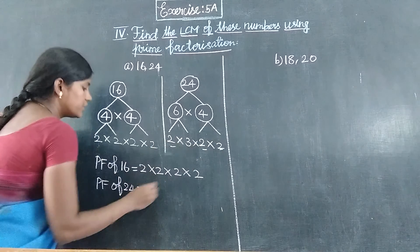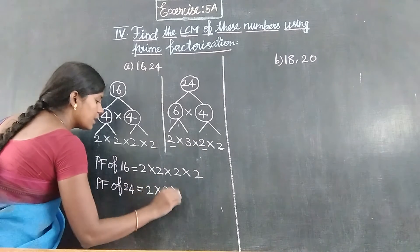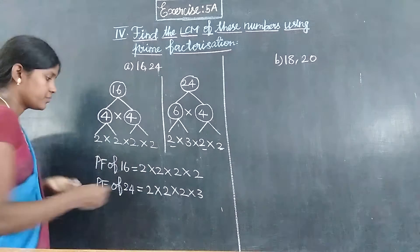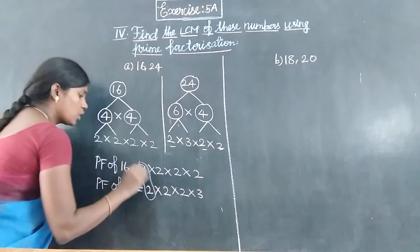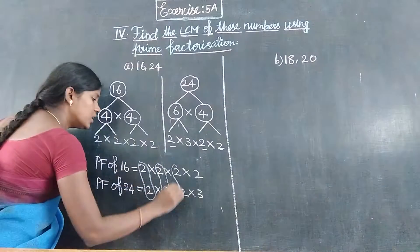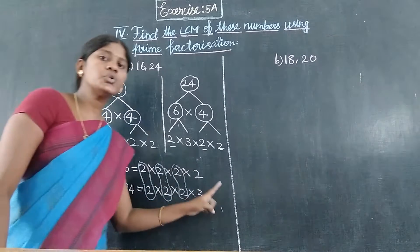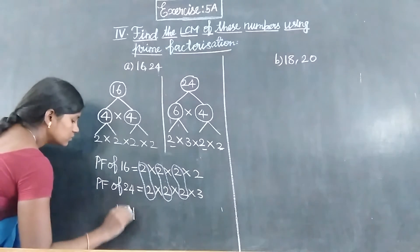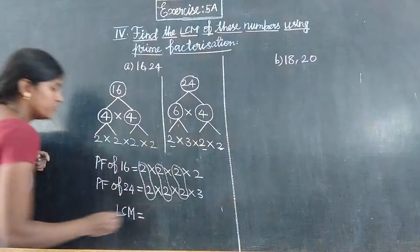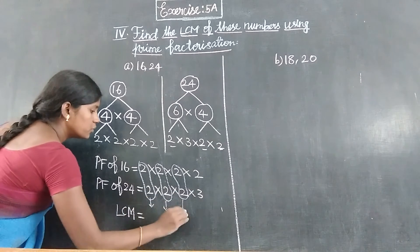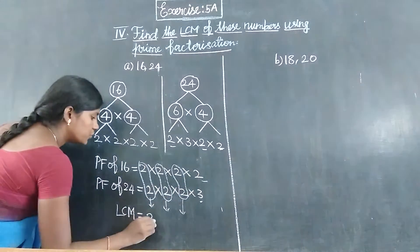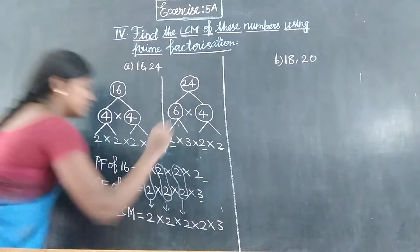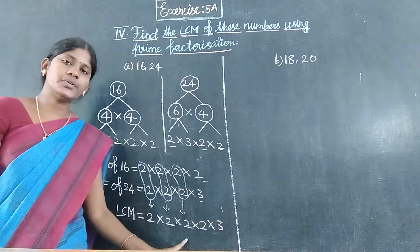So 24 equals 2 into 2 into 2 into 3. For 16, we got 2 into 2 into 2 into 2. Now identifying common factors: the first 2 is common, the second 2 is common, the third 2 is common, and the last 2 and 3 are the remaining factors.